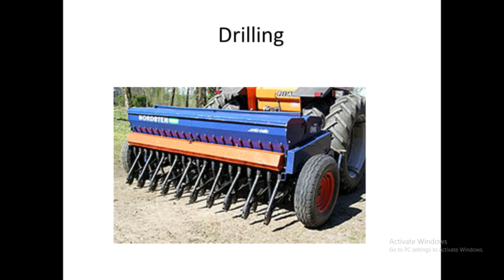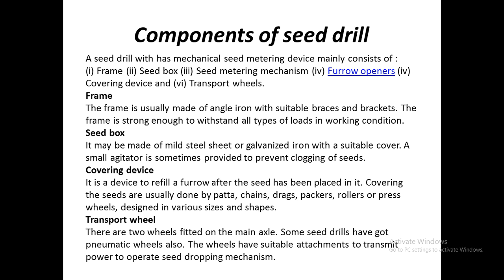The basic components of a seed drill are the frame, the seed box, the covering device, and the transport wheels. The frame is generally made of iron, as it must withstand the different loads acting on the seed drill during operation. The seed box is made of steel or GI, has a covering, and includes an agitator which prevents clogging of seeds as they pass through the seed metering mechanism. The covering device is placed behind the furrow after seeds are placed and is used to cover the opened furrow with soil. Transport wheels help move the drill between locations and also assist with depth control in the field.